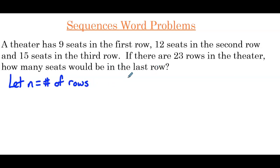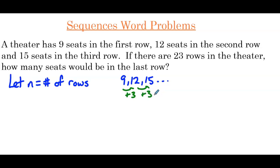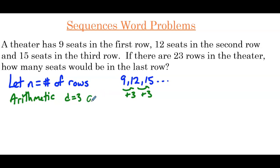Now if we write out this sequence, it would be 9, 12, 15, continuing on. Looking at the terms of this sequence, we should notice that we have to add 3 to go from one term to the next — so plus 3, plus 3. That tells us we have an arithmetic sequence with a common difference of 3, and the first term is 9.